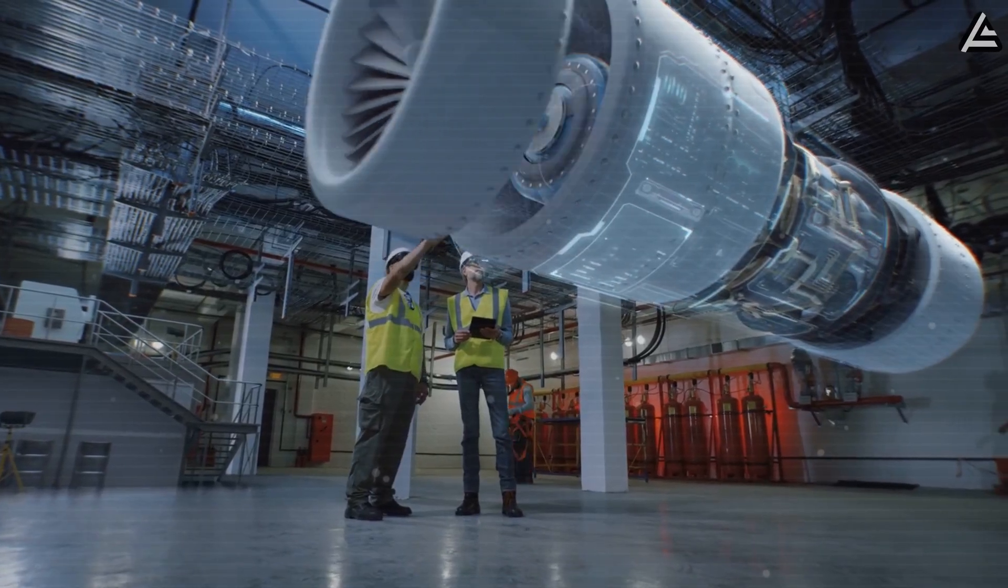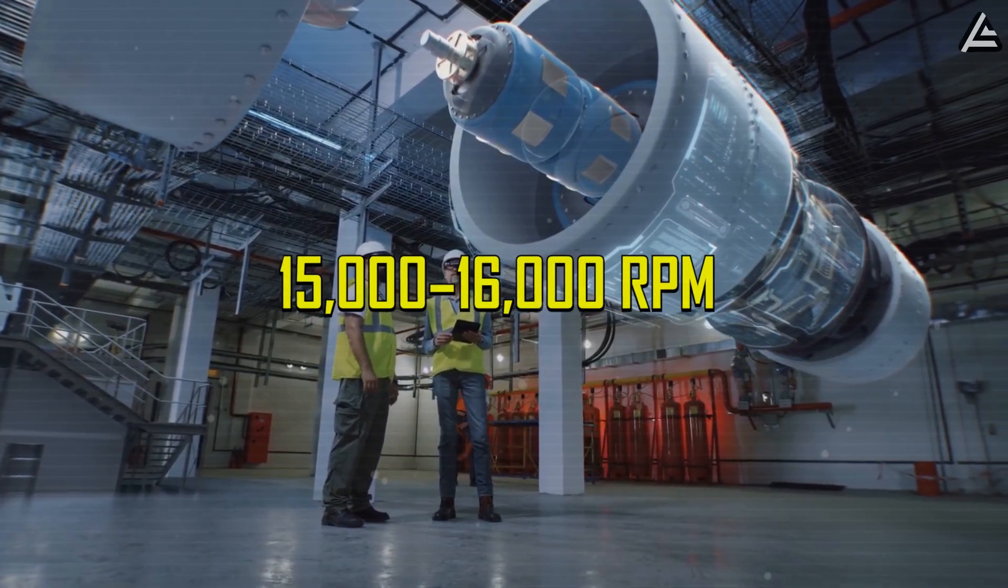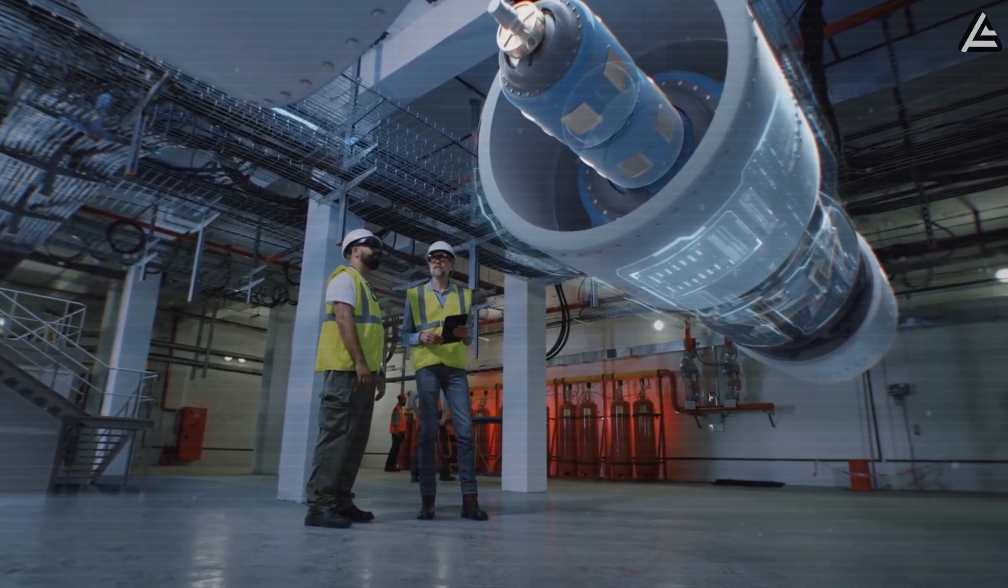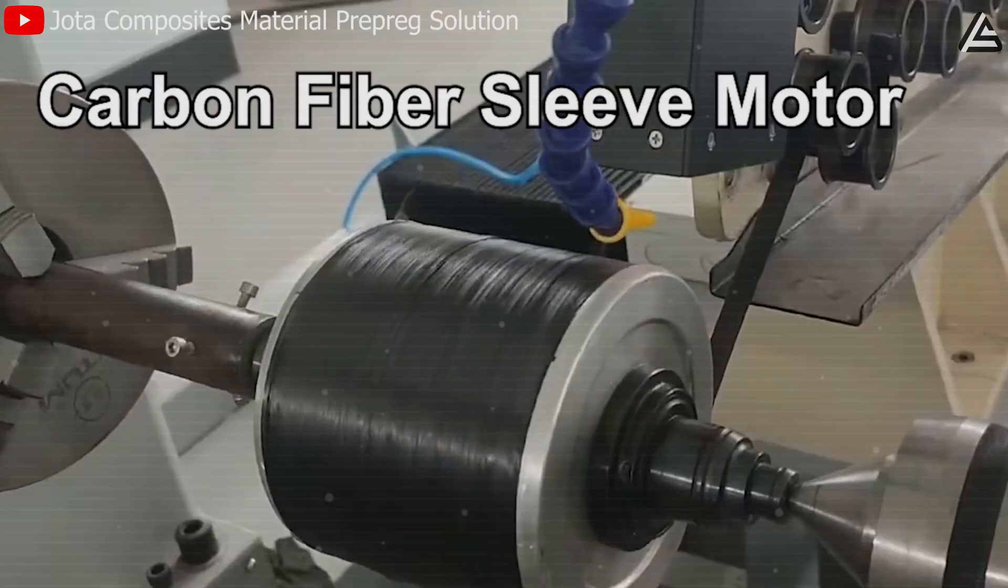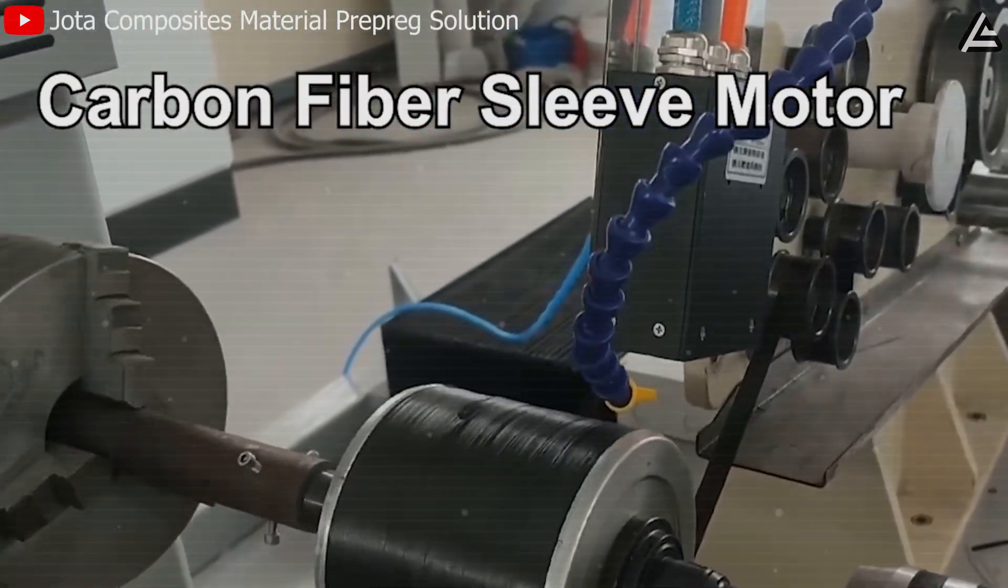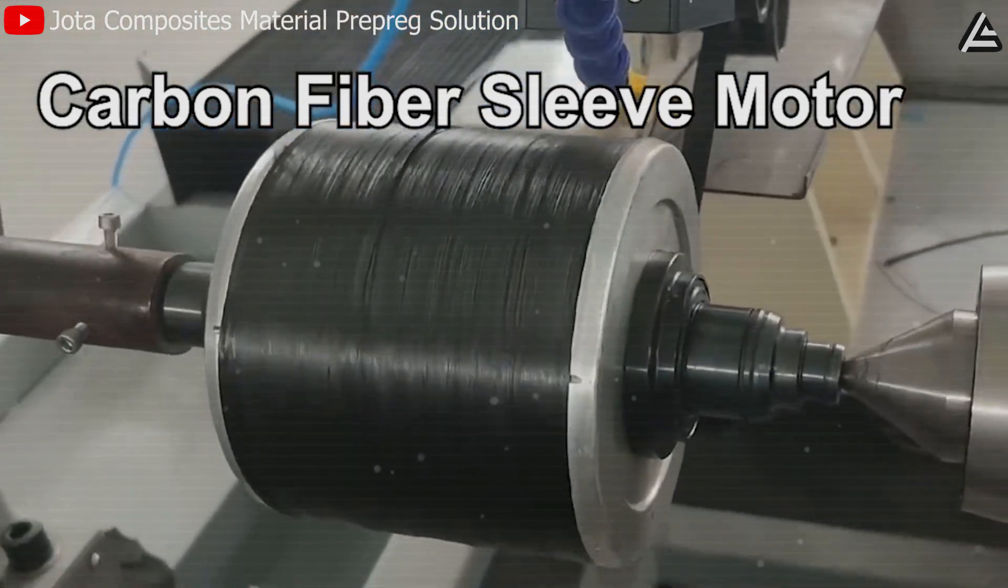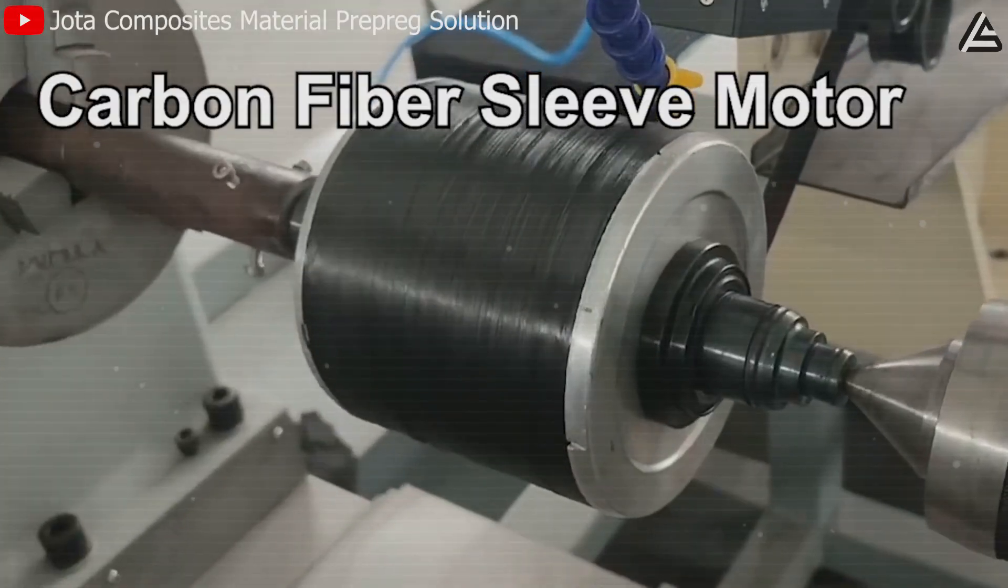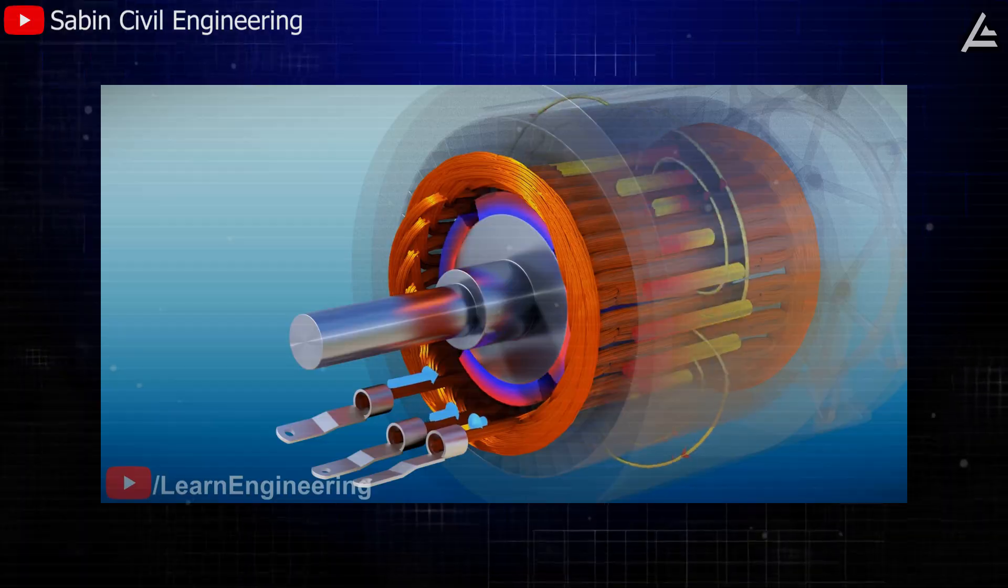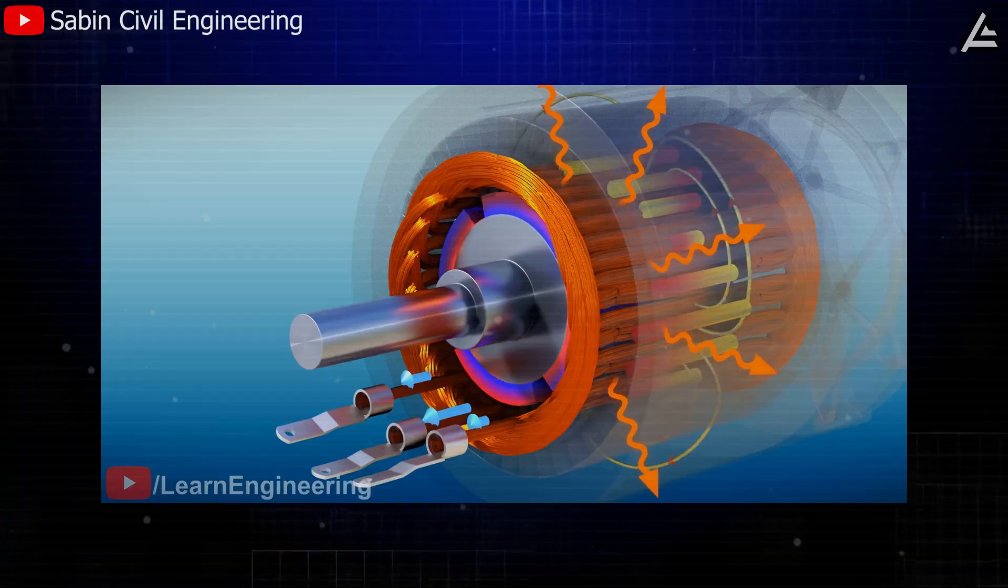Tesla's carbon fiber wrap, however, changes that equation completely. Carbon fiber offers tensile strength over 3,000 megapascals—nearly five times stronger than steel—while weighing about 60 percent less. This combination allows the rotor to safely spin up to 20,000 RPM, a full 25 to 30 percent higher rotational speed than traditional designs, without cracking, warping, or overheating.